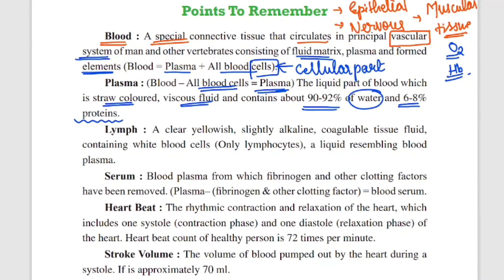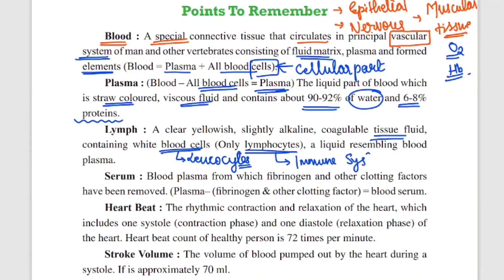Talking about lymph — lymph is also a liquid material that circulates in the circulatory system. It is a yellowish, slightly alkaline, coagulable tissue fluid. It contains white blood cells only — specifically lymphocytes. White blood cells are called leukocytes, and within leukocytes there are granulocytes and others, but in lymph there are only lymphocyte cells. Lymphocytes are related to your immune system, your defense mechanism. So lymph is related to your defense mechanism and immune system, which is why it contains only lymphocytes. Lymph is a liquid that resembles blood plasma but has a yellow alkaline nature.